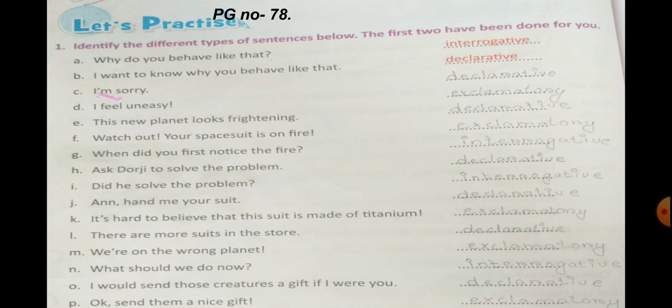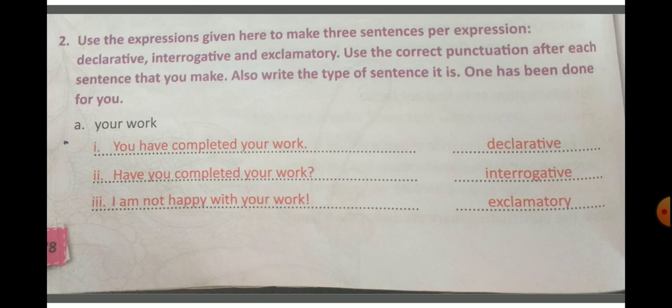Be careful about the spellings when you write down. For number 2 we have to use the expressions given to make 3 sentences per expression — declarative, interrogative, and exclamatory — using the correct punctuation marks. Number A is already solved for us. The expression is 'your work.' Number 1: You have completed your work, full stop — declarative. Number 2: Have you completed your work? — interrogative. Number 3: I am not happy with your work! — exclamatory.